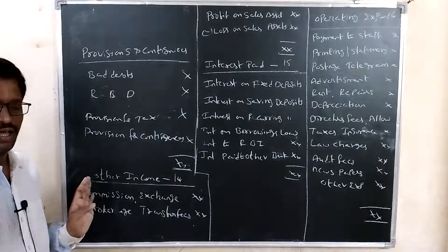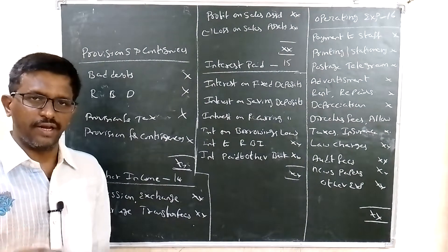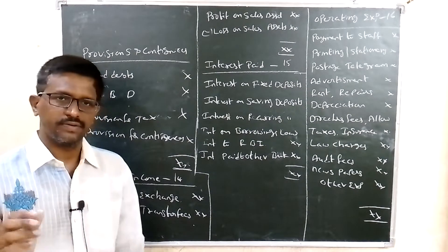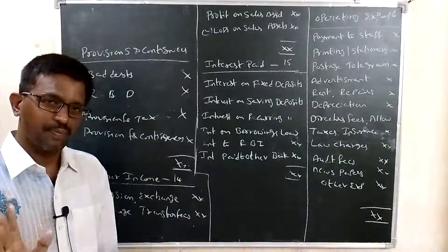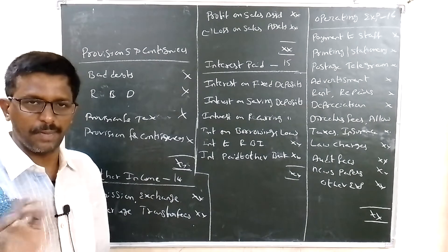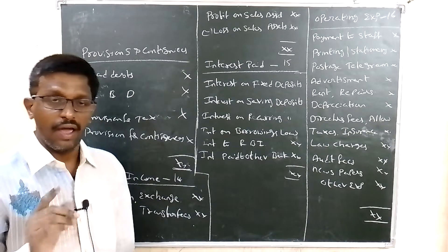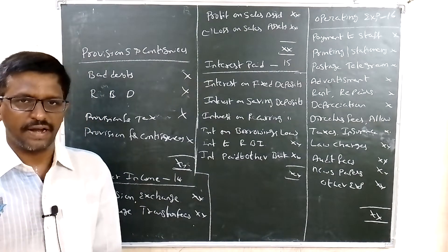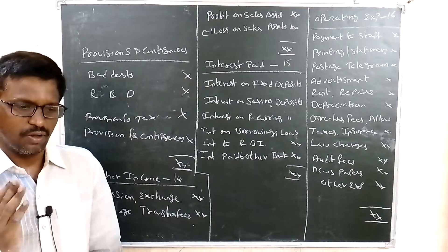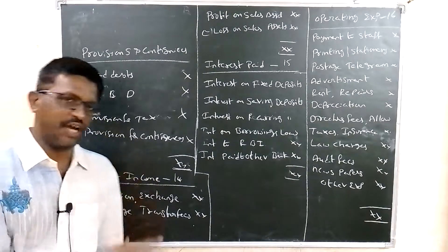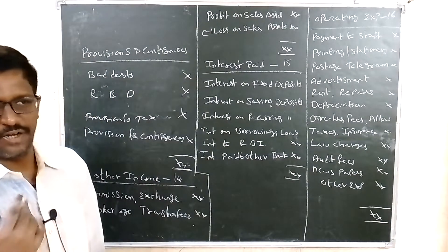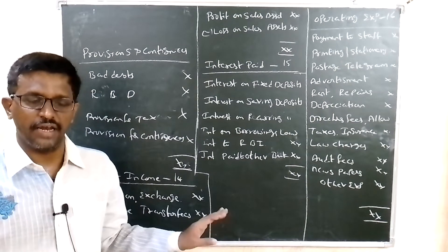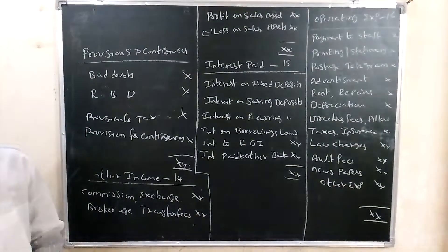Those are all the items shown in the profit and loss account. Schedule 13 and 14 form total income. Schedules 15 and 16 plus provisions form total expenditure. Roman number III gives current year profit as A minus B. Roman number IV is appropriation: 25 percent transfer to statutory reserve, any other reserve, and balance transferred to balance sheet. The balance sheet pro forma will be covered in the next video. Please subscribe, click the bell icon, share, and comment. Thank you.